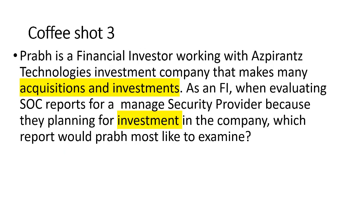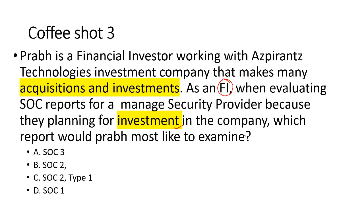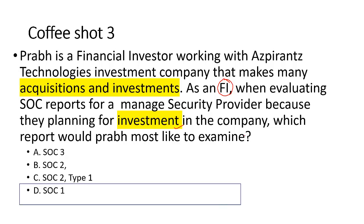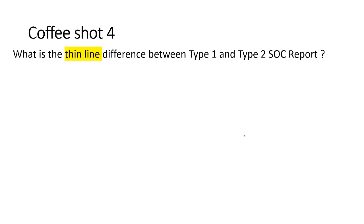Question 3: Prab is a financial investor working with Aspirants Technology investment company that makes acquisition investments. As a financial investor evaluating the SOC report for a managed security provider before investing in a company, which report would Prab most likely examine? As an investor, SOC 2 doesn't matter because I'm planning for investment. SOC 3 gives only high-level details published on a website. SOC 2 talks about IT controls. From an investment point of view I'll look at financial statements, so the answer is SOC 1.